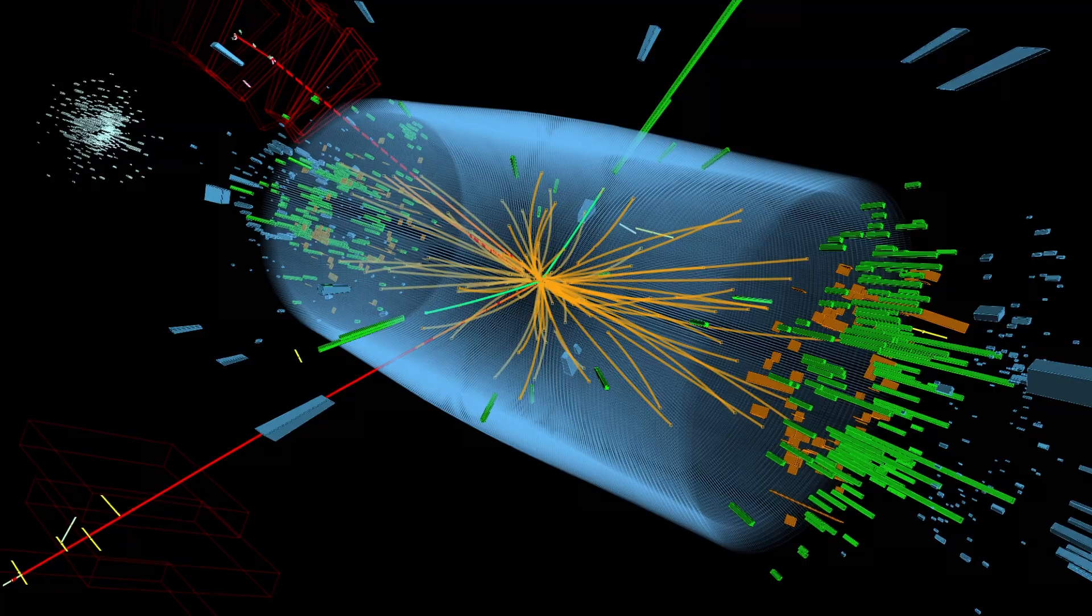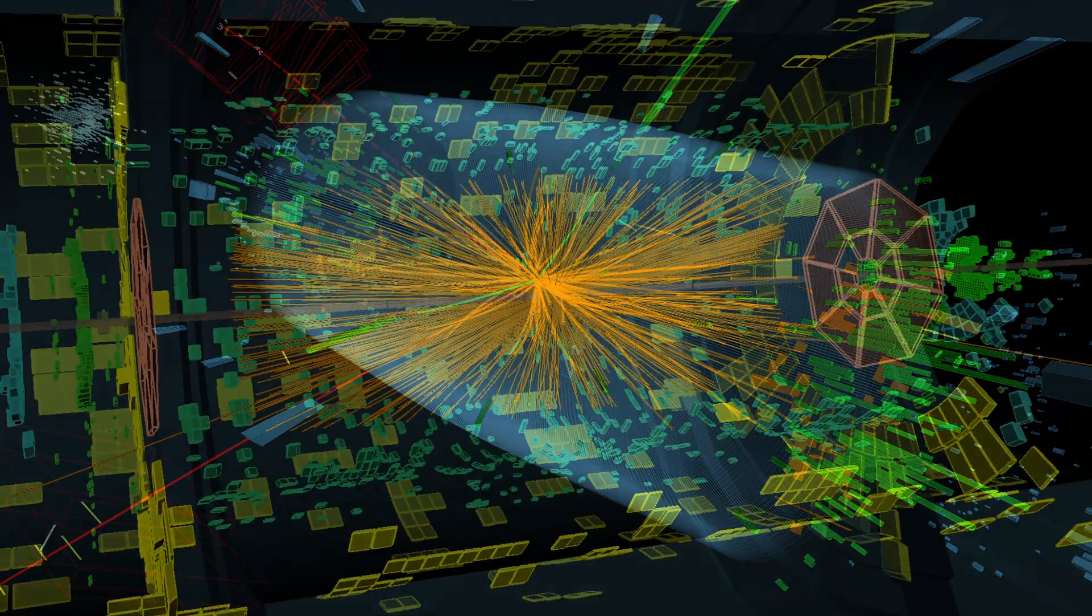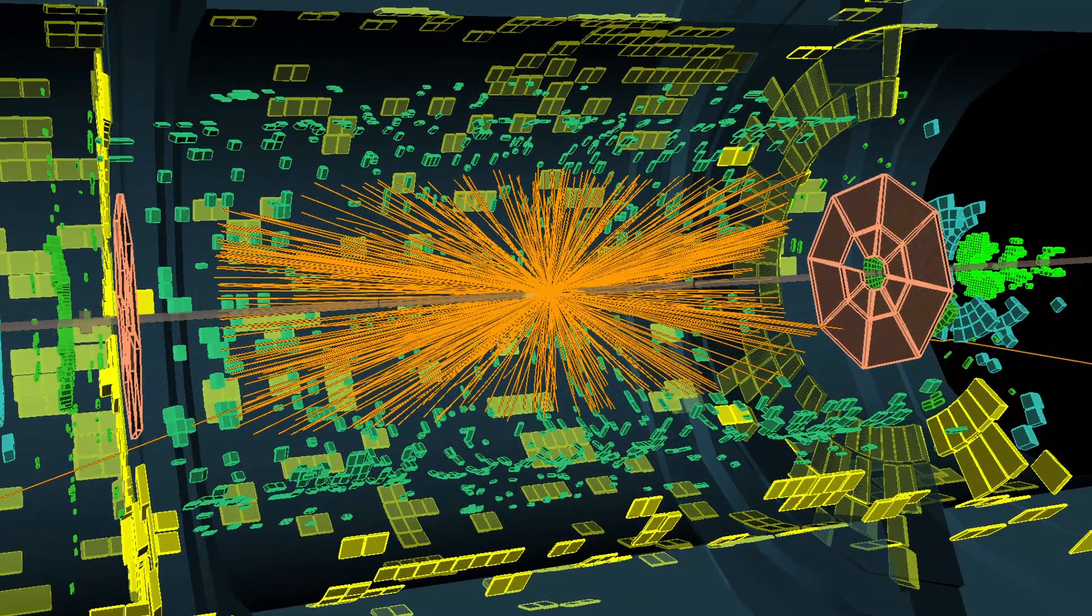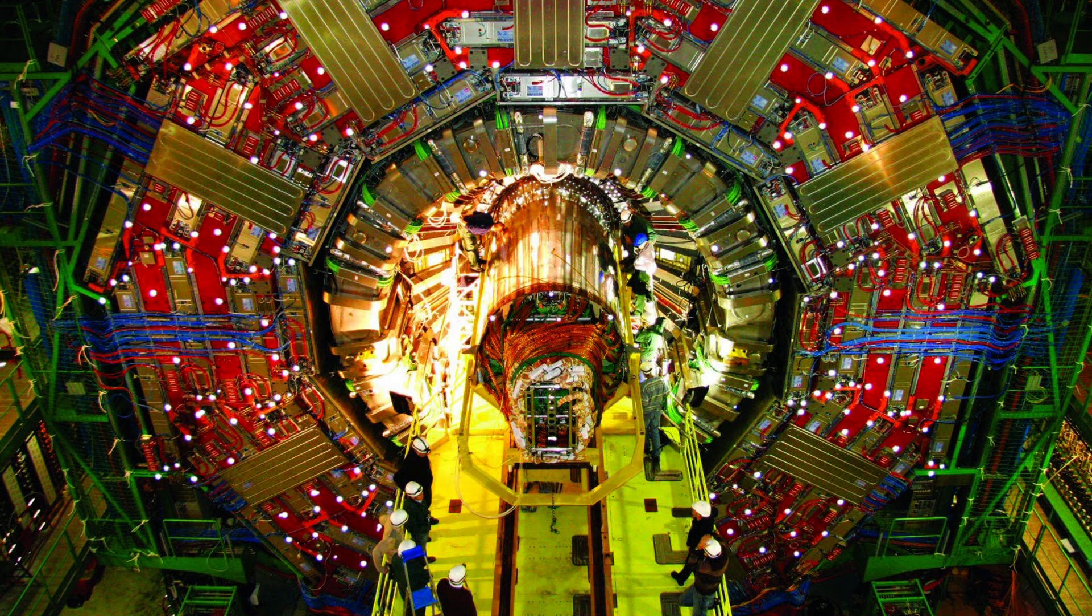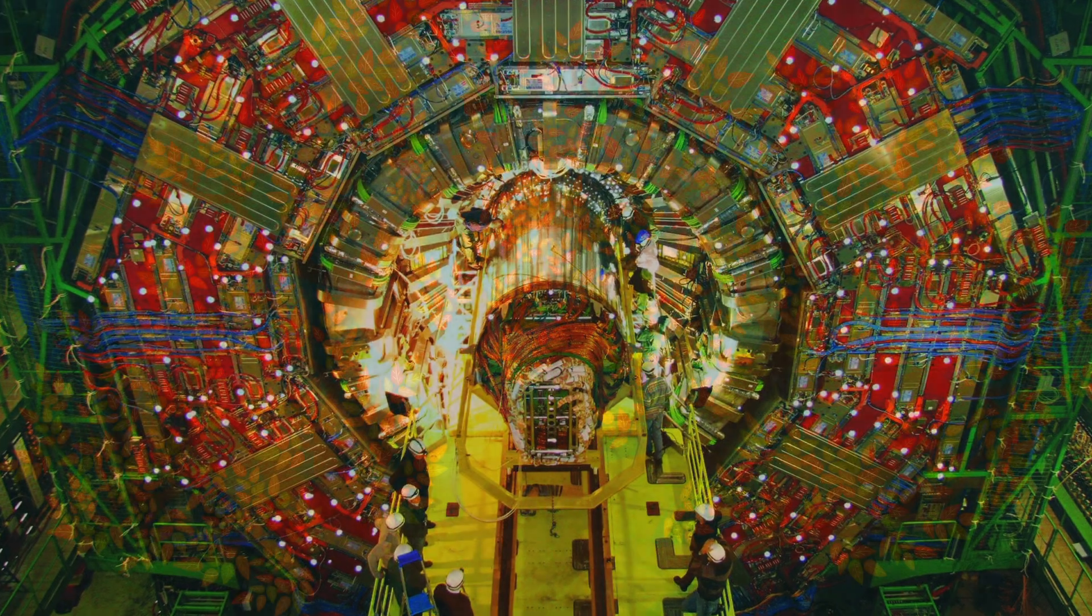To see those traces, our detector, with 150 million sensors, acts like a really massive 3D camera, taking a picture of each collision event at up to 40 million times per second. That makes a lot of data.